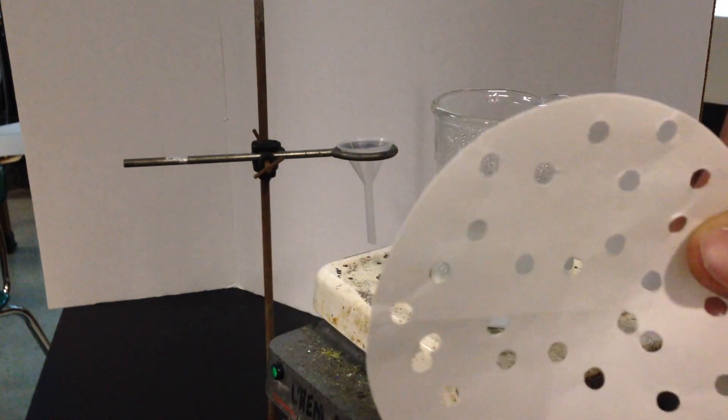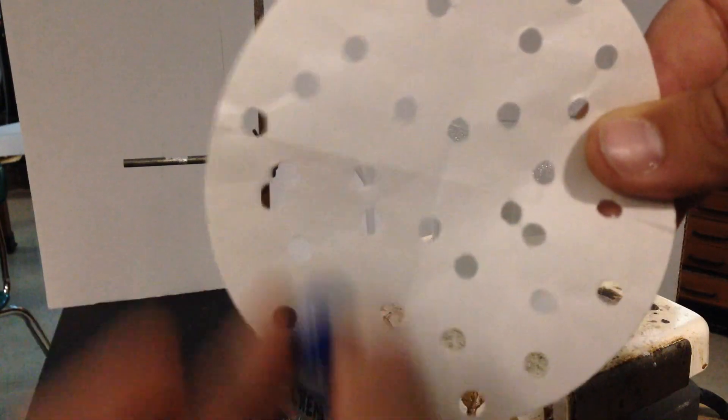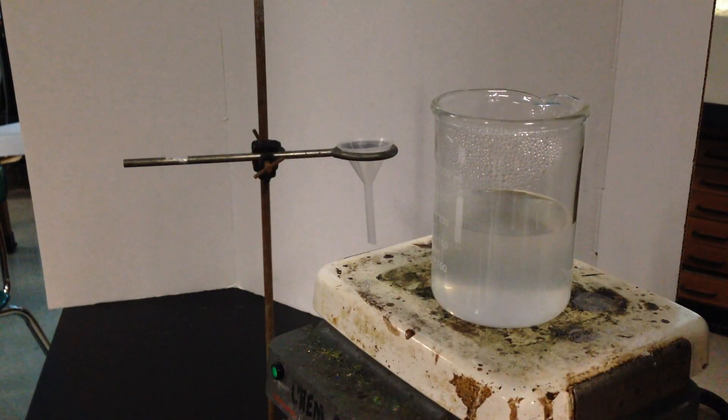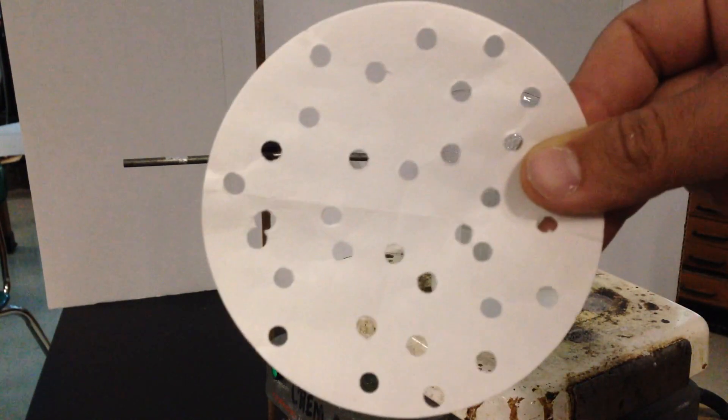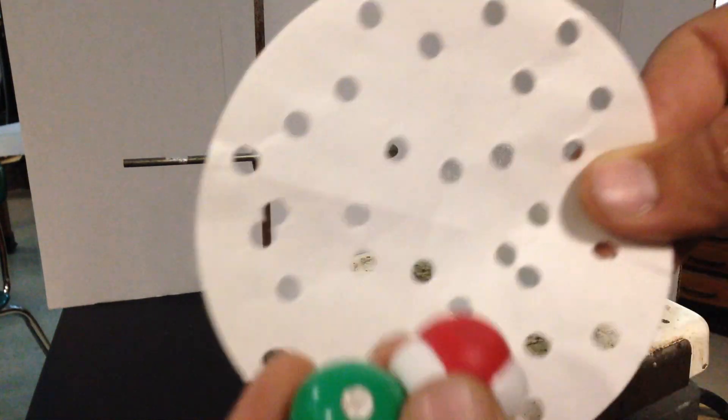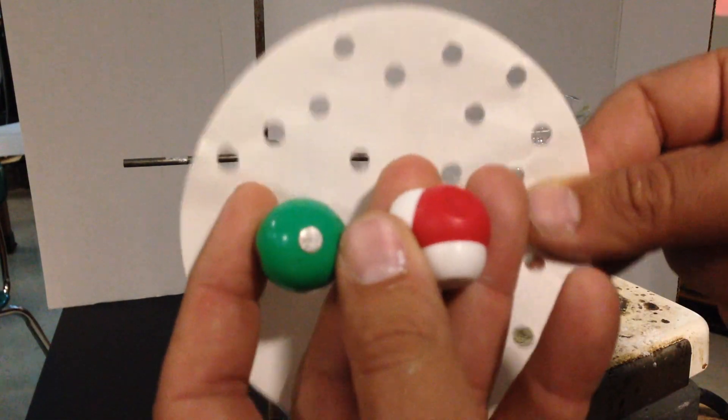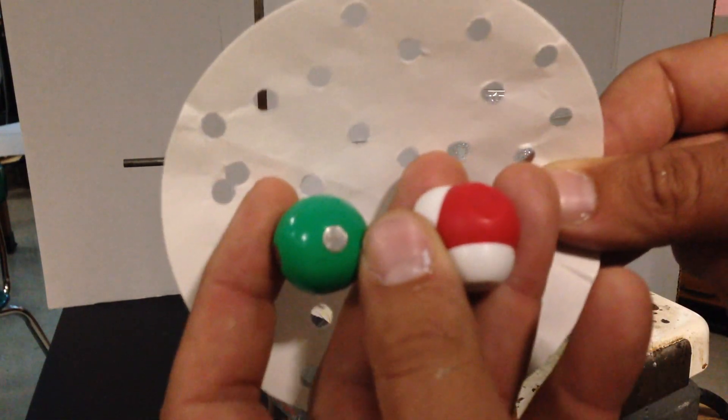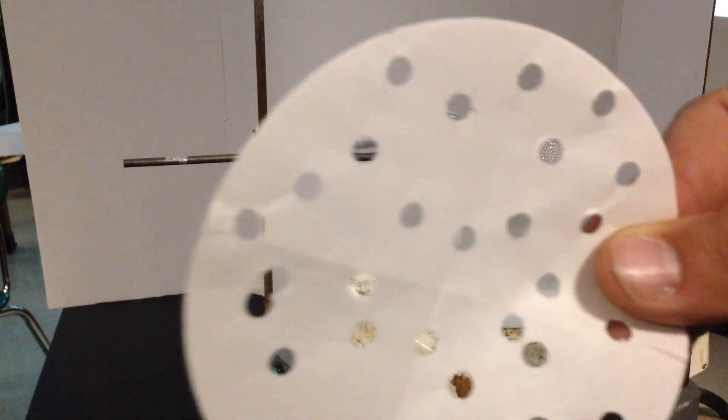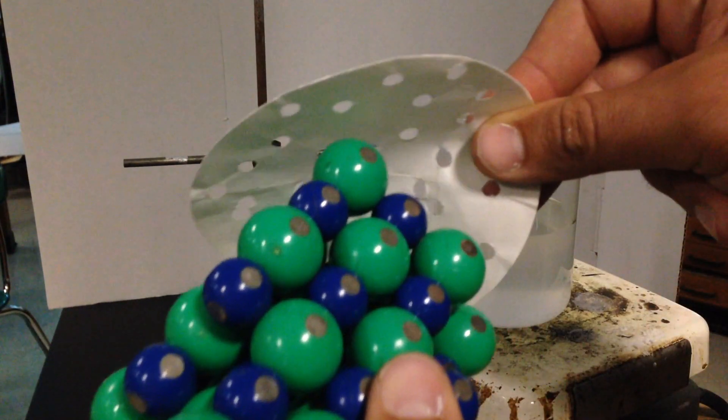But individual particles can. So the point of this demo is we cannot filter out the ions because they're about as small as the water itself. We can only filter out big crystals that connect to each other.